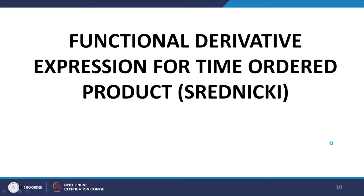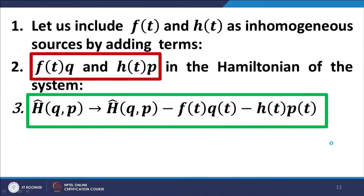Let us proceed from here. From here on, a concept called functional derivatives is going to make repeated presence. Because many viewers may not be familiar with functional derivatives, I have incorporated an appendix in this PPT covering them, which viewers can go through together with the lecture substance. We work out the expression for the time-ordered product using the concept of functional derivative. For this purpose, we introduce time-dependent inhomogeneous sources by adding the terms F(t) and H(t) to our Hamiltonian, transforming our Hamiltonian into the form given in the green box.